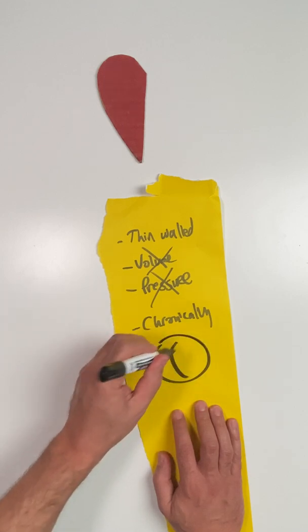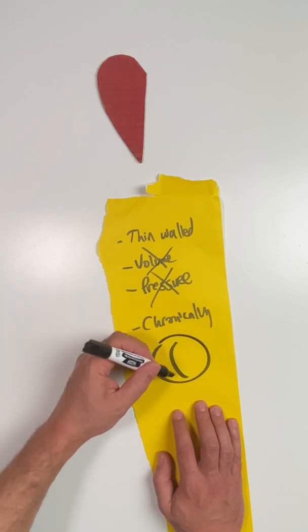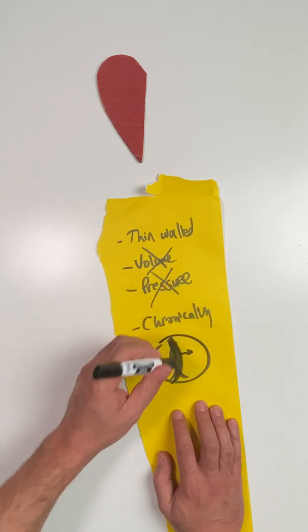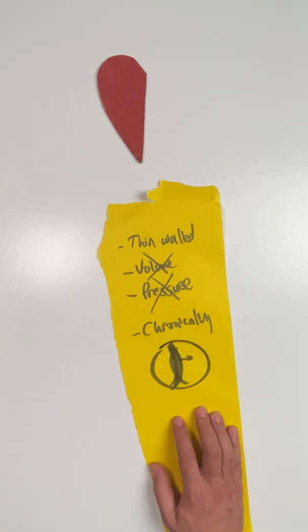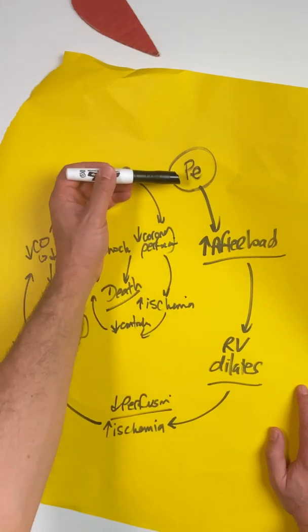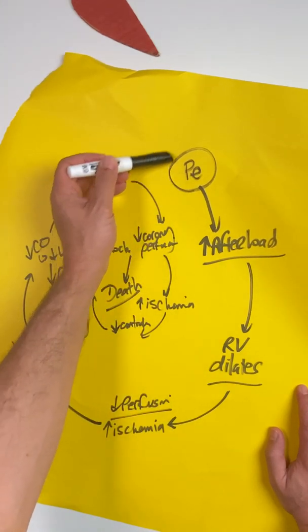It also shares the interventricular septum with the left ventricle. And when things get bad, you can have a bowing of that interventricular septum into the LV, causing more hemodynamic problems. And don't forget about the RV death spiral. When you have acute changes in the pulmonary arterial vasculature, like a big PE, this is going to acutely increase the afterload on that right ventricle.